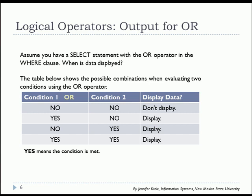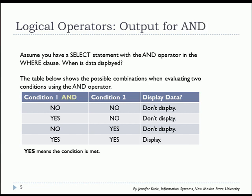By comparison, looking at the truth table for the OR operator: if condition one is not met and condition two is not met, we filter the data out — it won't display. But if condition one is met and condition two isn't, we will display. If condition one is not met but condition two is, we will display. And if both conditions are met, we'll display. So there's quite a bit of difference between the AND operator and the OR operator in whether or not you're going to see data.